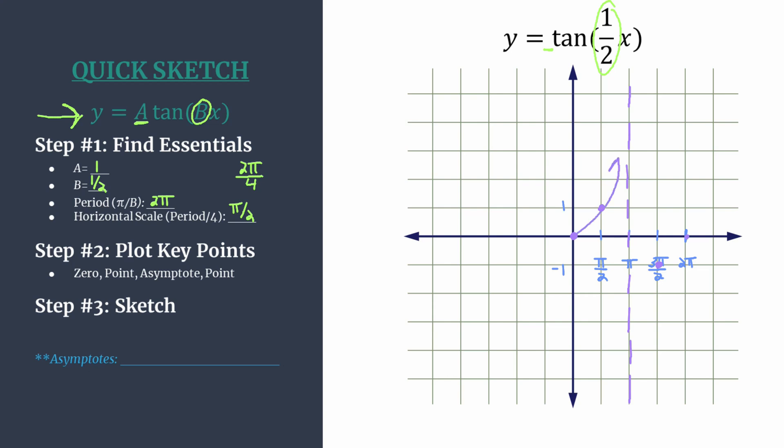Step three is all about just sketching in that nice tangent curve and here is one cycle. I like to call this a broken cycle since the asymptote's in the middle. If you want to extend this graph you can just repeat the pattern in either direction, so asymptote would be right there. You can work the pattern backward if you'd like, another asymptote. And so you see we just have some really nice tangent curves for our quick sketch graph.